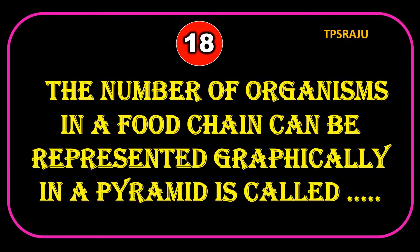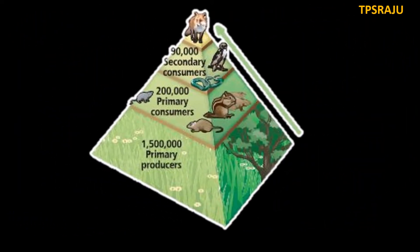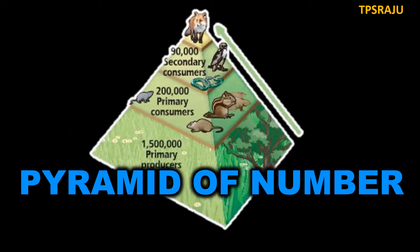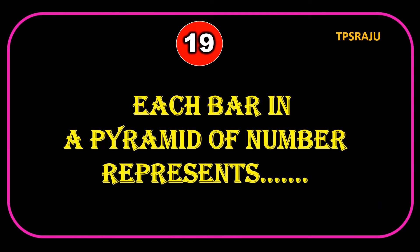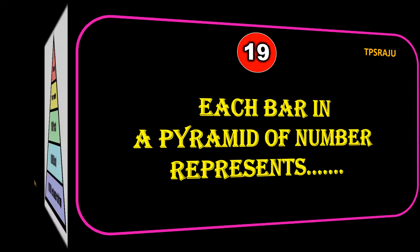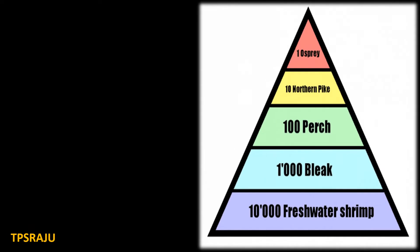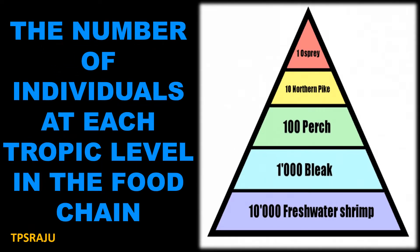The number of organisms in a food chain represented graphically in a pyramid is called pyramid of number. Each bar in a pyramid of number represents the number of individuals at each trophic level in the food chain.